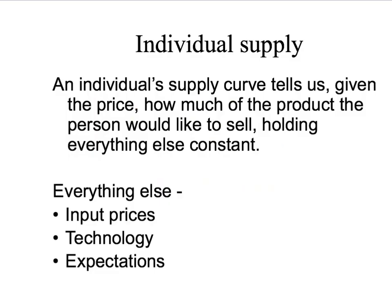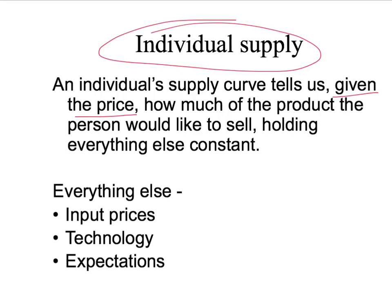Let's start off with our definition of an individual supply curve. An individual supply curve tells us, given the price, how much of the product the person would like to sell, holding everything else constant. Notice we have the price-taking assumption built in — supply curves assume that the sellers take the prices given. So as soon as you draw a supply curve, you're making that price-taking assumption.